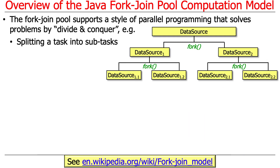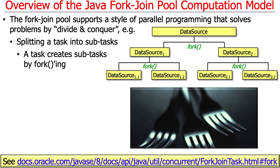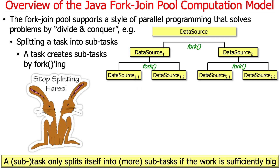Here's how this looks from a programming point of view, moving away from pseudocode. We start by taking the single original data source and splitting it up into subtasks by forking. Every time you create a subtask, you fork it. What fork does is put the task onto a deque, making it available for running by one of the threads in the fork-join pool. You keep forking as long as the subtasks are too big. Once a subtask reaches the smallest size, you stop forking, but up to that point you keep forking and subdividing things.